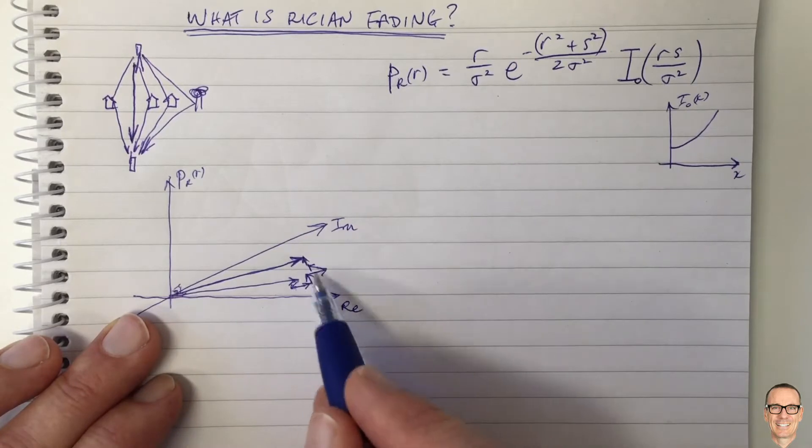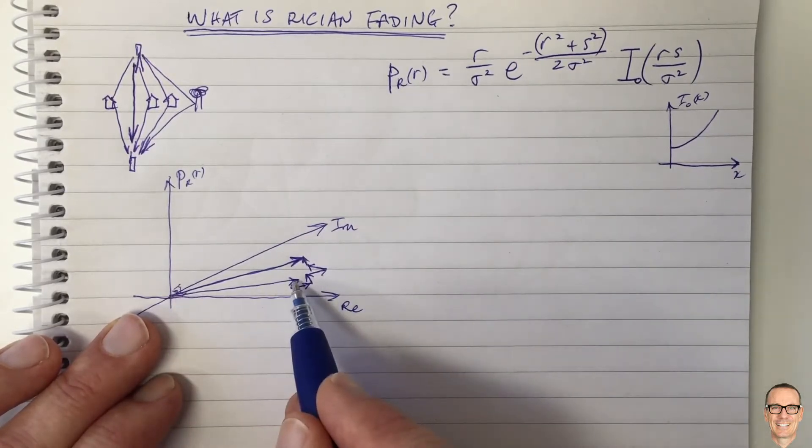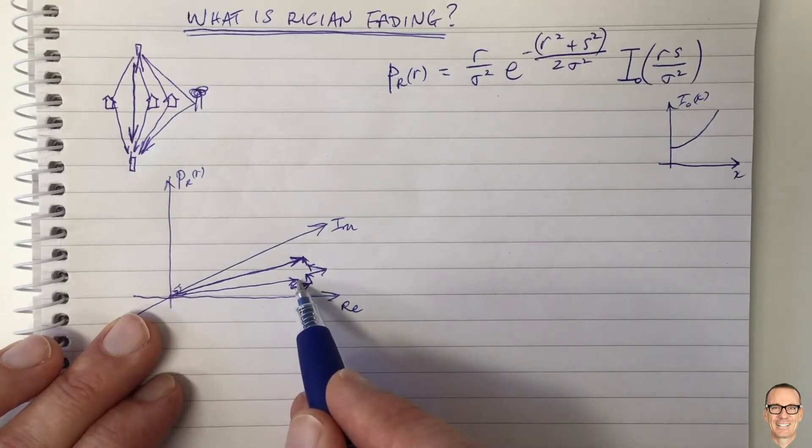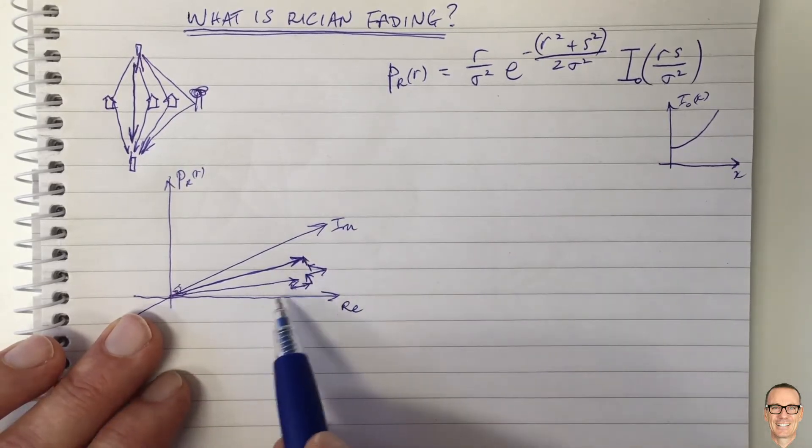So again, it's exactly the case with Rayleigh except in this case one of the paths dominates. It could be more than one, but let's just consider one dominating. So what's going to be the difference here?